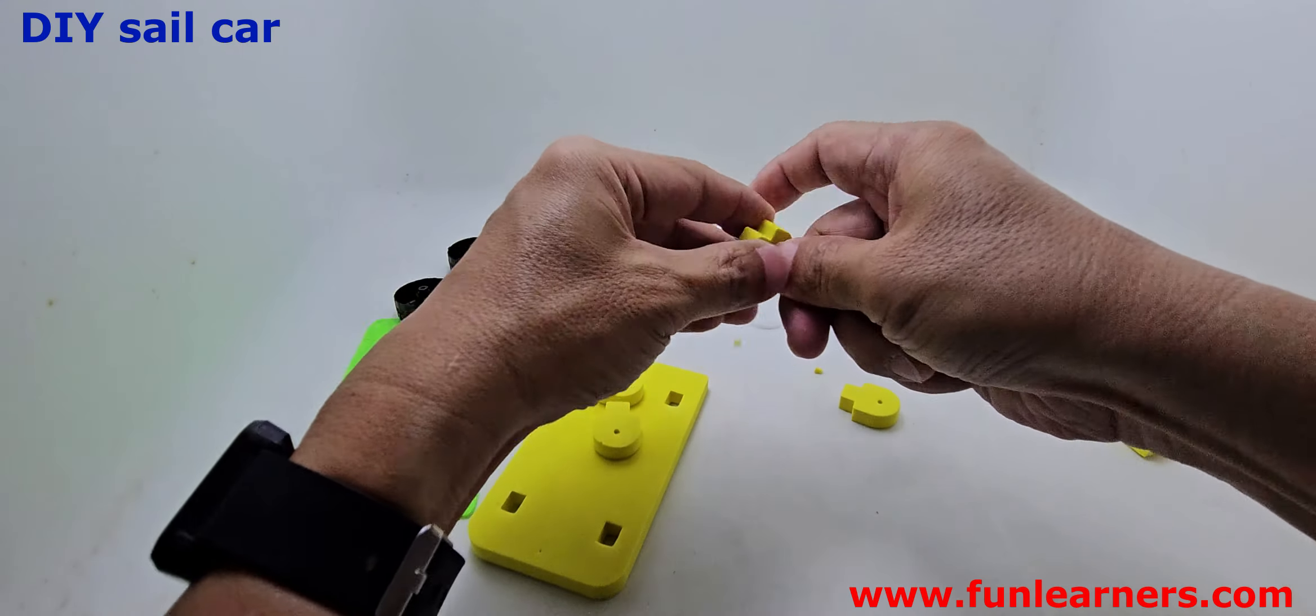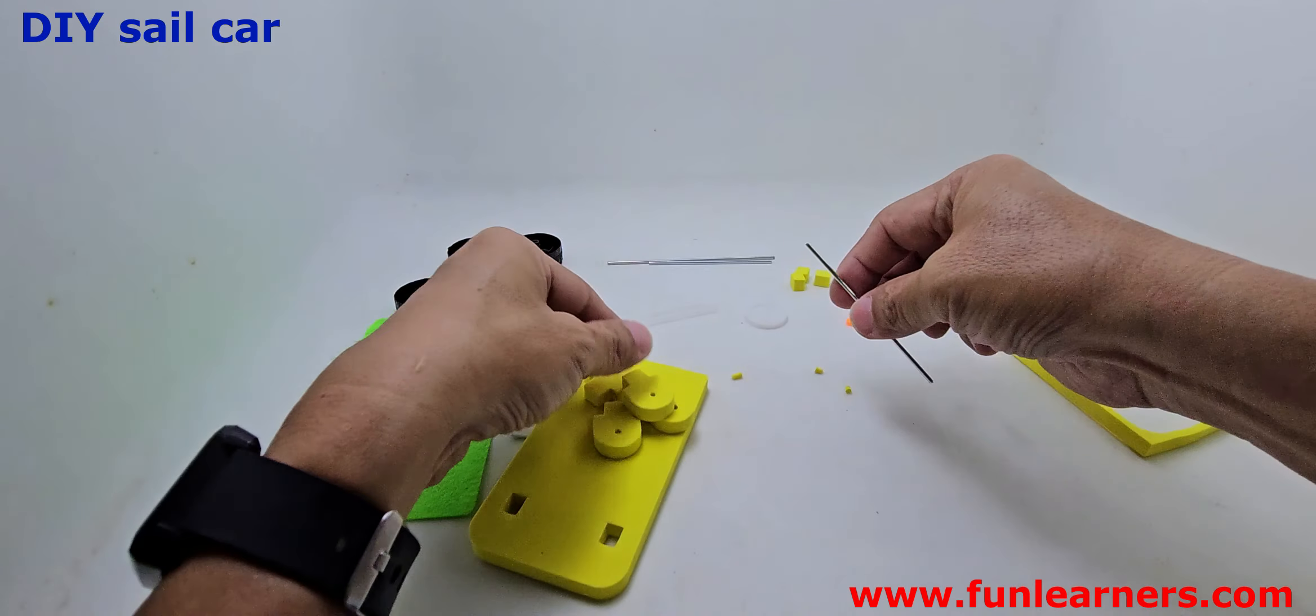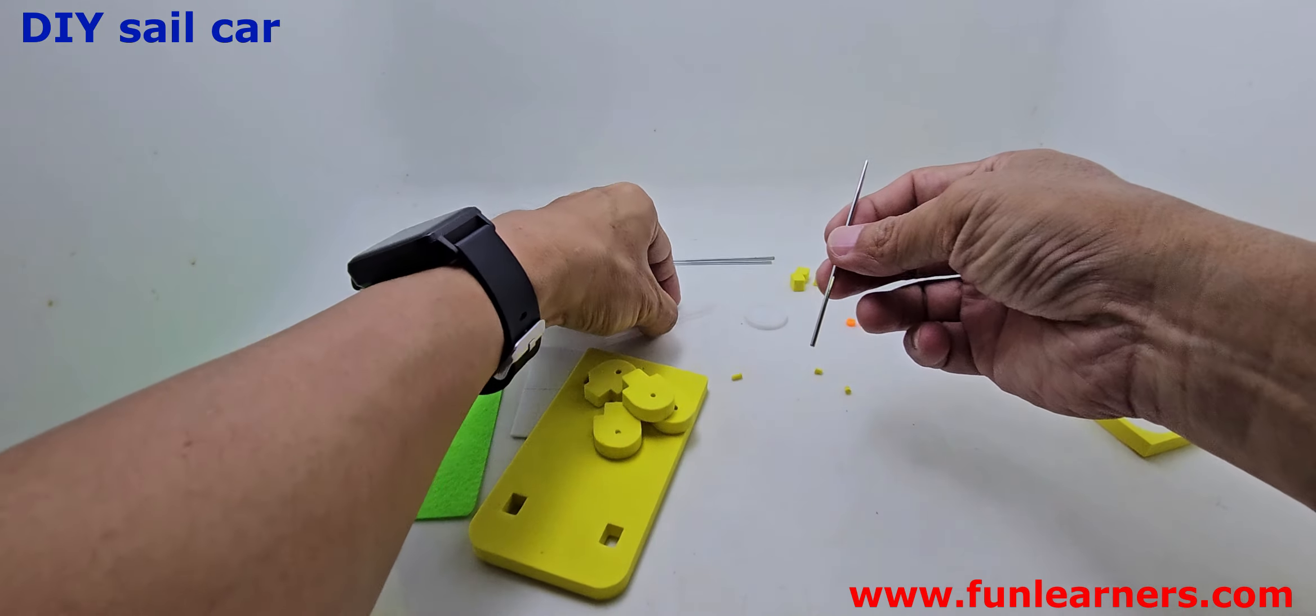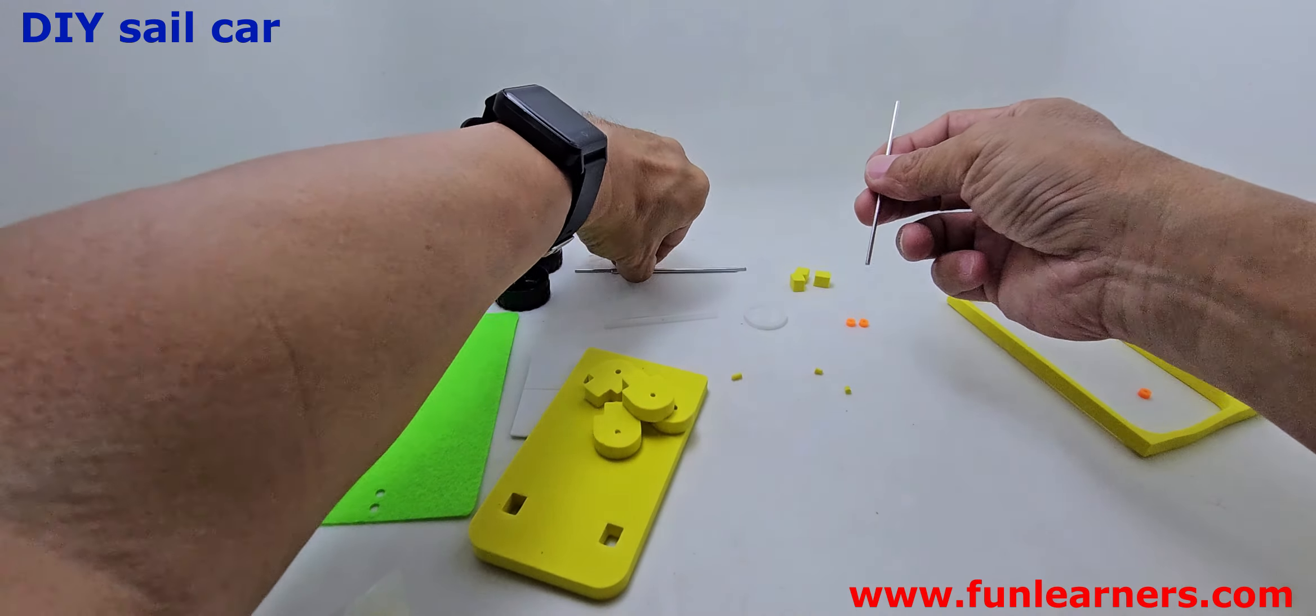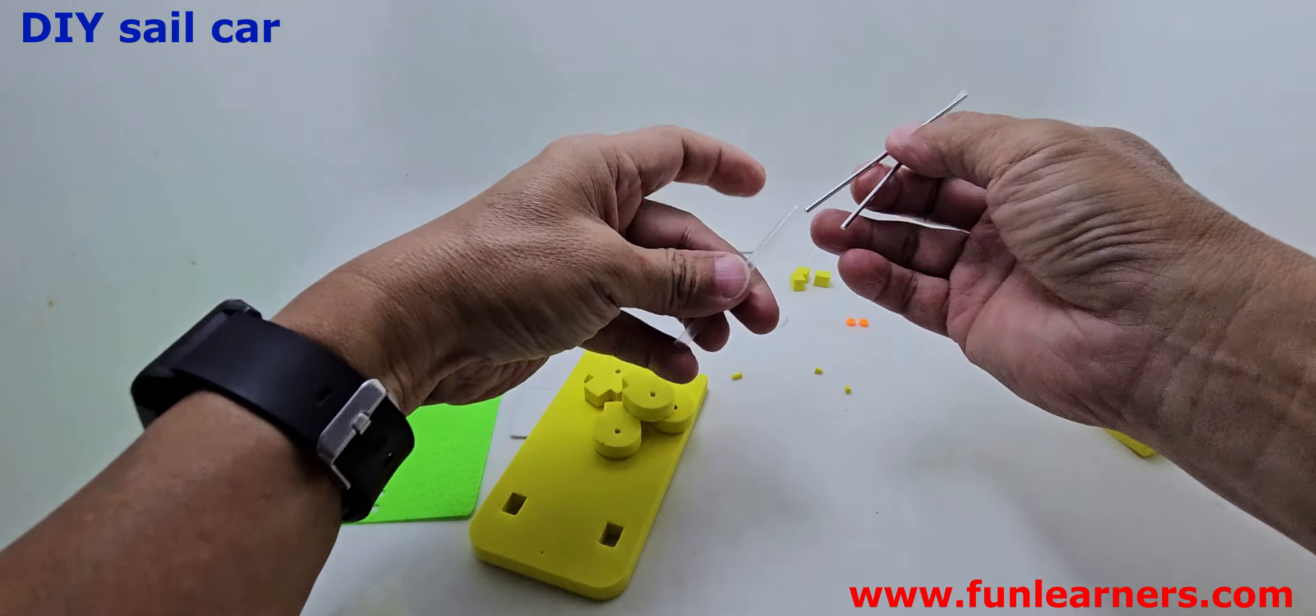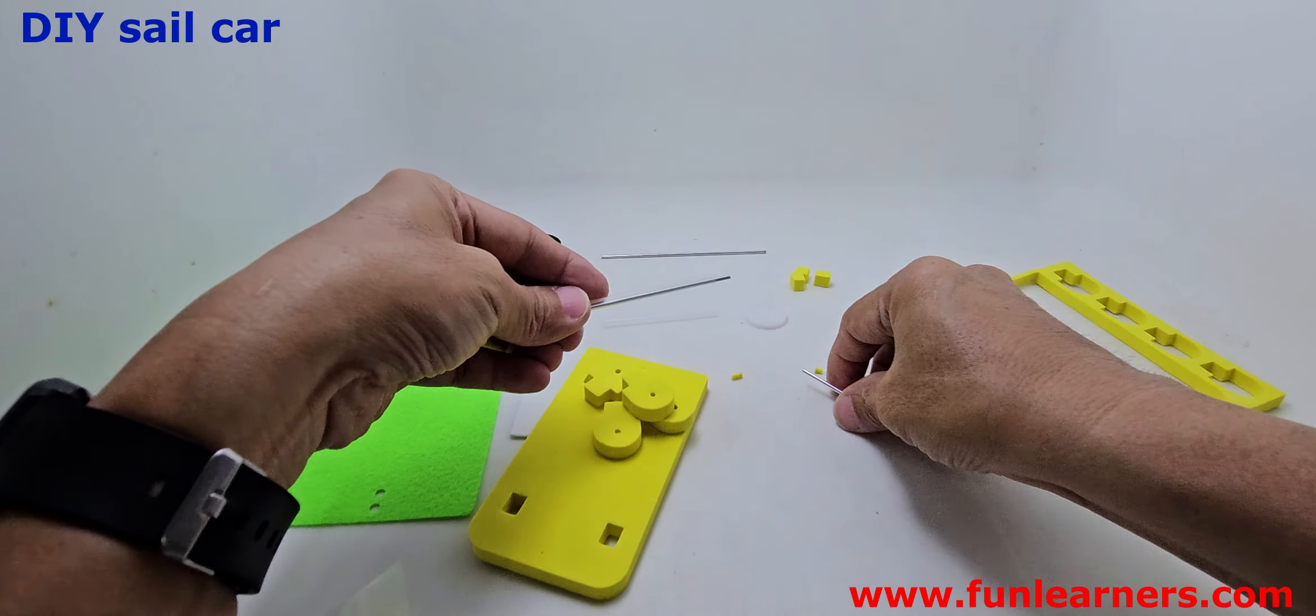Okay, now slot this. You're given three spindles; take the two shorter ones and slot through. Your spindle will be longer than this plastic tube.